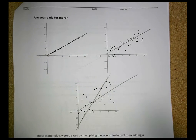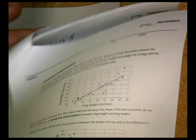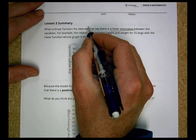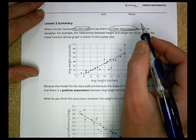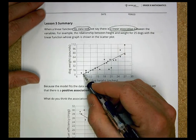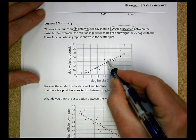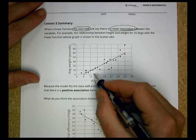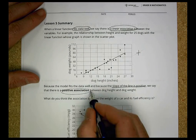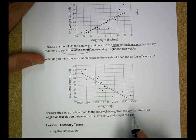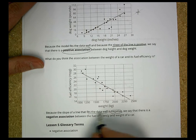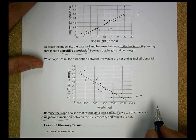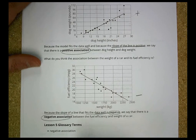In summary: when a linear function fits data well, we say there's a linear association between the variables — when the variables all seem to fit on that line. When the slope of the line is positive — going up — it's a positive association. When the data fits well and the slope is negative, it's a negative association, like the fuel efficiency and weight of a car.